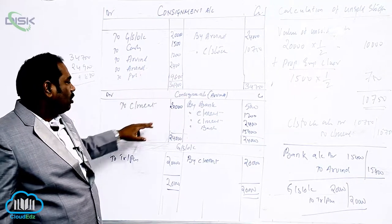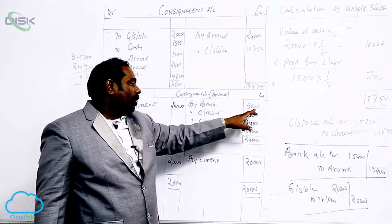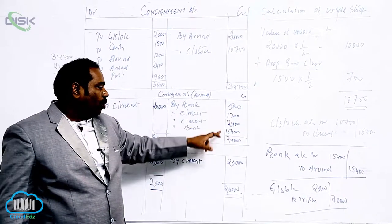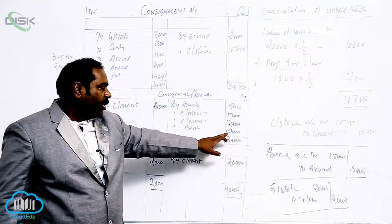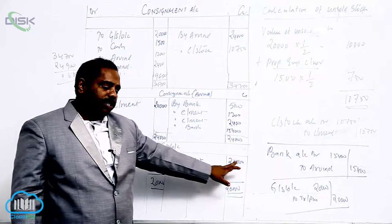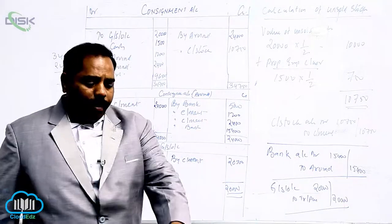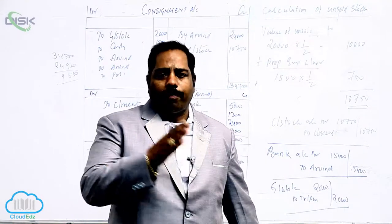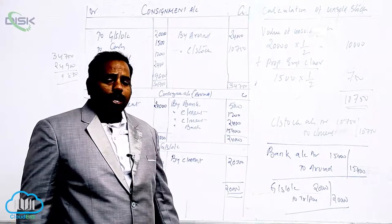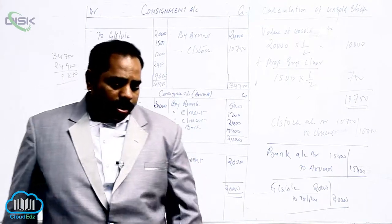If the credit side is more than the debit side, we get a profit. In the consignment book: to consignment is for sales, by bank is for advance, by consignment is for commission and expenses. When you close this account, you will get the balancing figure which has to be settled by the consignee — the amount which has to be paid by the consignee to the consigner. Whenever bad debts occur, we have to check whether we are paying del credere commission or not. Whenever we are paying del credere commission, the loss is to be borne by the consignee, not by the consigner.